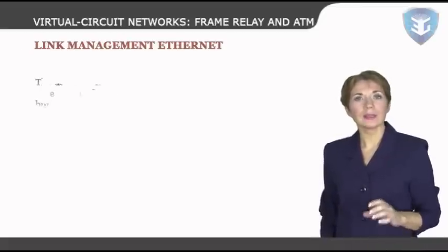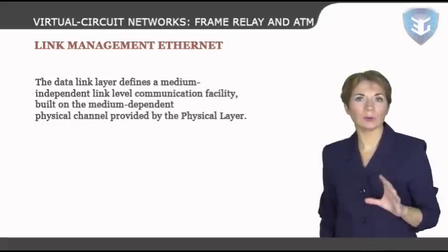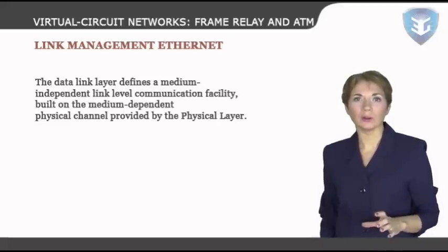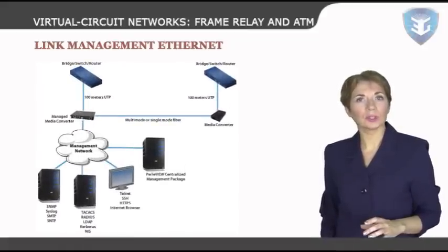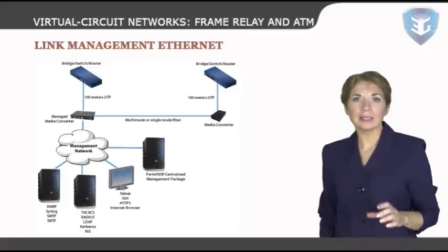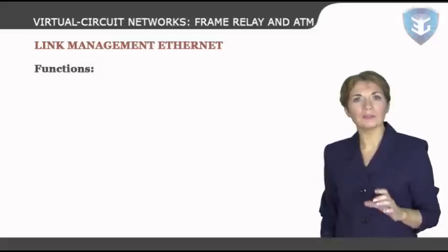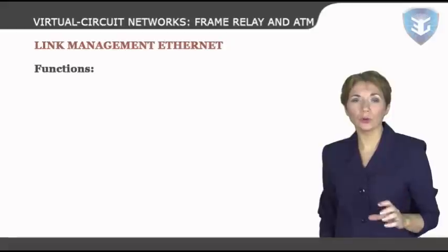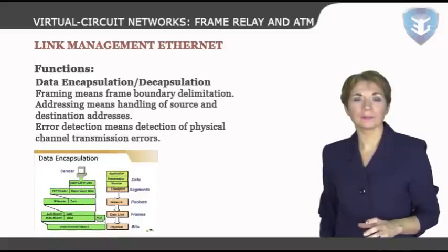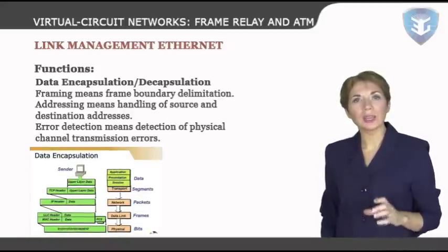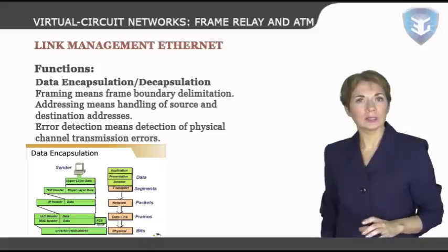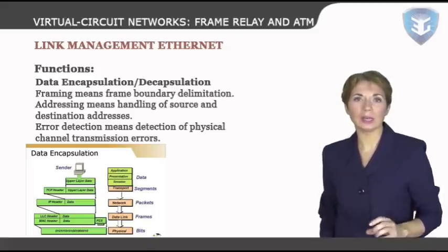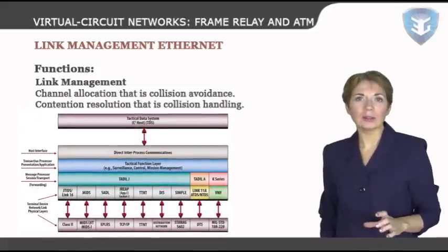Link Management Ethernet: the data link layer defines a medium-independent link level communication facility, built on the medium-dependent physical channel provided by the physical layer. It is applicable to a general class of local area broadcast media, suitable for use with the channel access discipline known as Carrier Sense Multiple Access with Collision Detection. The two main functions generally associated with a data link control procedure are: data encapsulation and de-encapsulation; framing, meaning frame boundary delimitation; addressing, meaning handling of source and destination addresses; error detection, meaning detection of physical channel transmission errors; link management; and channel allocation, which is collision avoidance and contention resolution for collision handling.